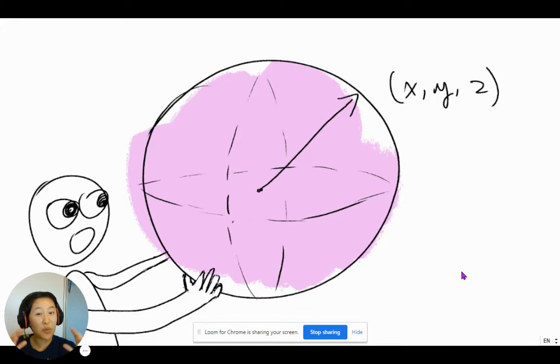However, this is not a regular ball. This is a quantum ball, and quantum balls have the special property that you actually don't know where this arrow points. Does that mean all hope is lost? Does that mean you will never be able to retrieve this message that you spent two years searching for?